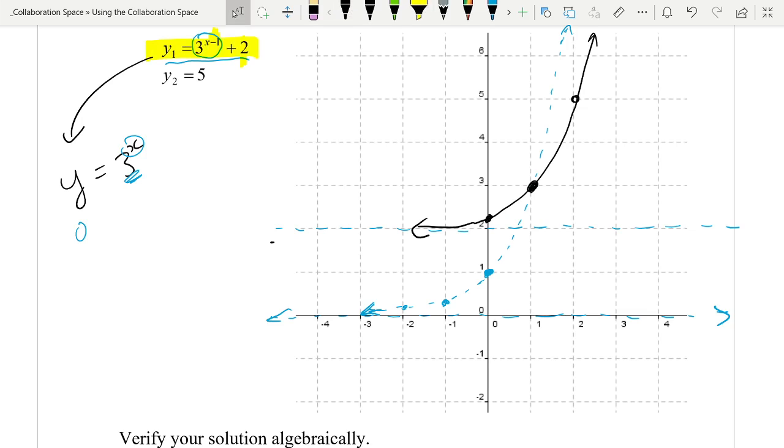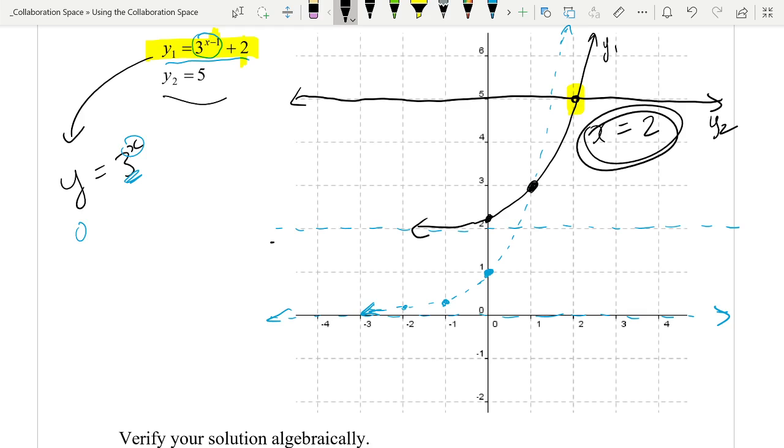It's going up this way, and two is my asymptote. So there we go. We have graphed y1. y2 is pretty easy. Five. There we go. There's y equals five. I want to label this. This is y1. This is y2. And there is my answer. My answer is x equals two.